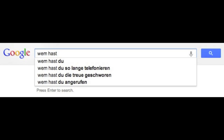A quick Google search using 'wem hast' gives an incomplete sentence 'Wem hast du?', then 'Wem hast du solange telefoniert?' — which is technically incorrect because the past tense of telefonieren is telefoniert — meaning 'with whom have you spent so much time on the telephone?' Also: 'Wem hast du die Treue geschworen?' (whom have you sworn to be true?). The last Google result should actually use Wen, because 'Wen hast du angerufen?' (whom have you called?) — anrufen is not a dative verb; it takes the accusative case.